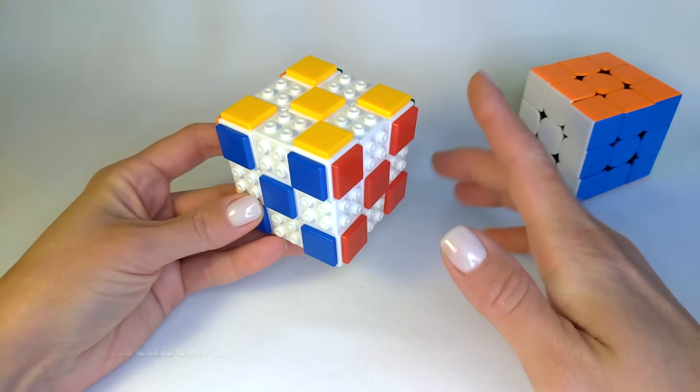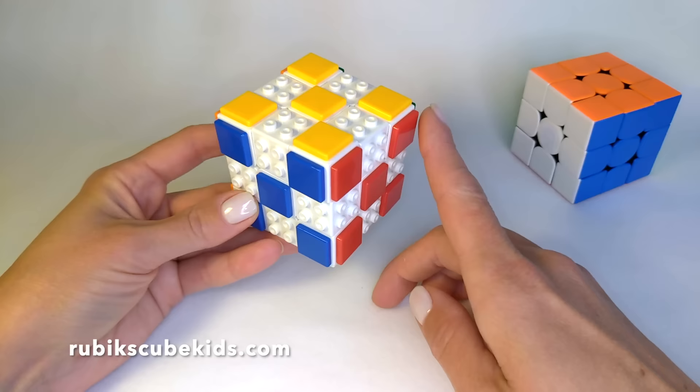The third type of piece is a corner. The corner is a part of 3 sides and has 3 colors. This corner is red, blue and yellow, and fits between the red, yellow and blue centerpieces.